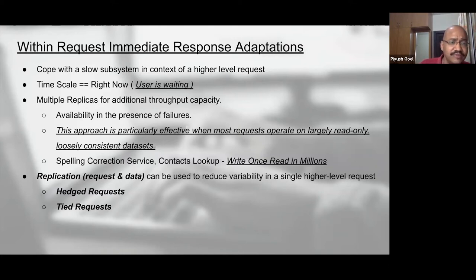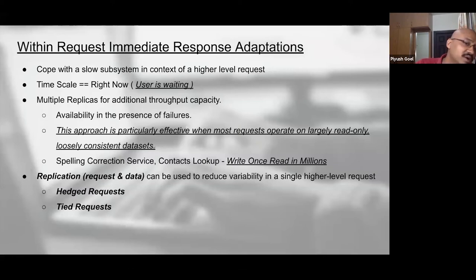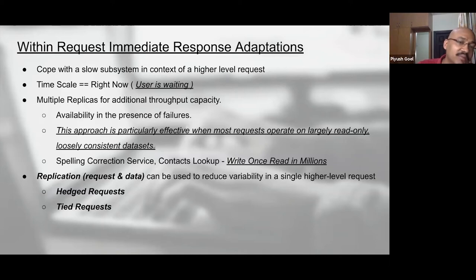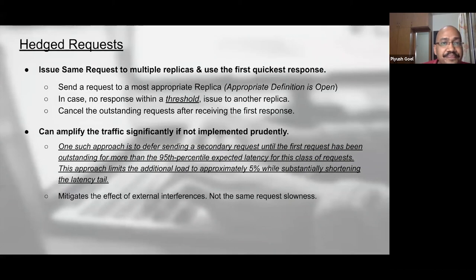Now, the first class of techniques we're talking about is that we can either replicate your request or replicate your data. The next two techniques we're going to discuss are about how to replicate your requests rather than replicating your data. When we talk about the coarser-grain techniques at a larger system level, we'll discuss how application data can help. So let's jump into the two techniques: hedge requests and tiered requests.